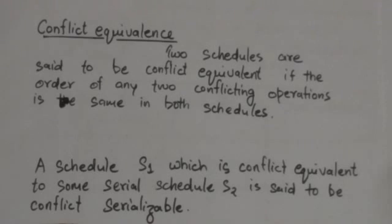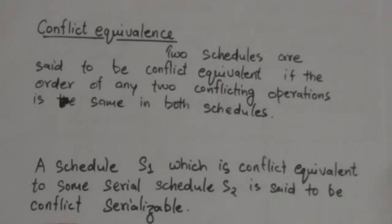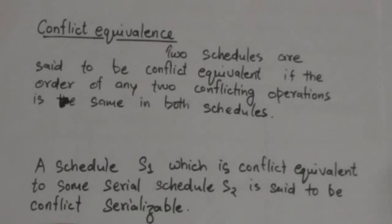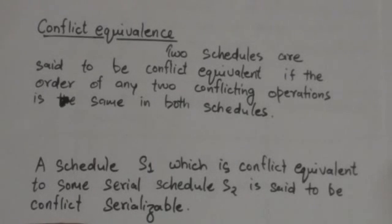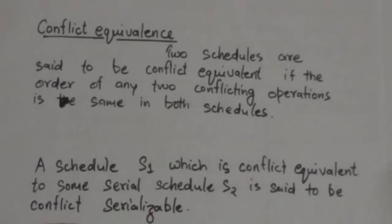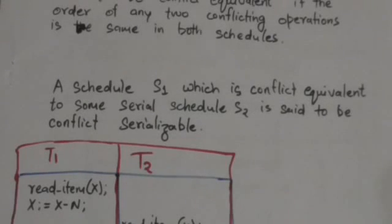What is the meaning of conflict equivalence? Two schedules are said to be conflict equivalent if the order of any two conflicting operations is the same in both schedules. Two operations in a schedule are said to conflict if they belong to different transactions, access the same database item, and at least one of them is a write operation. If we change the order of conflicting operations, we will get different results.